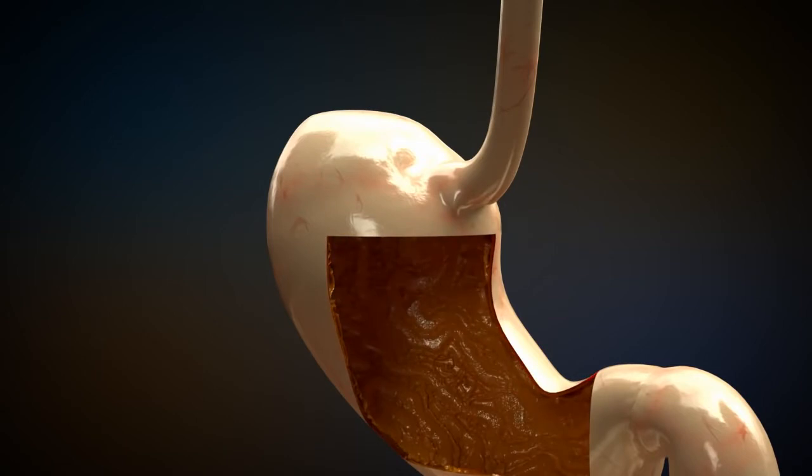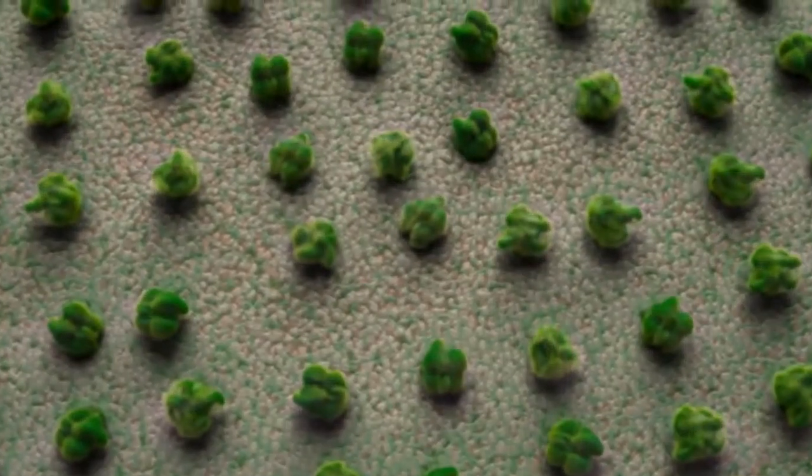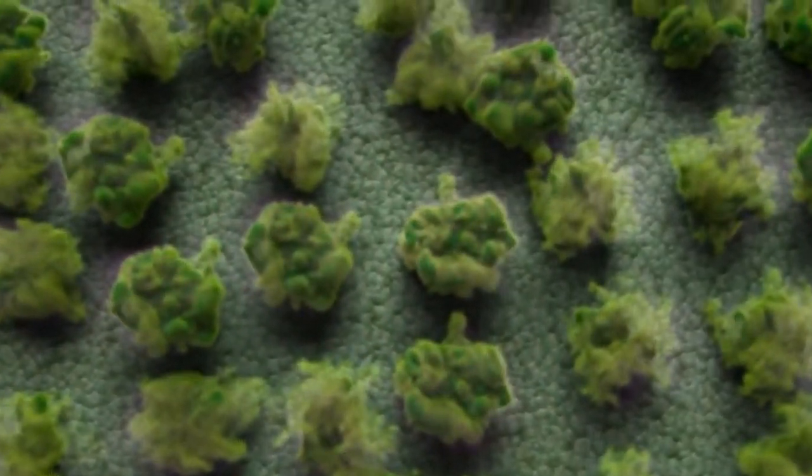On the inside there are rugae that allow the stomach to enlarge when food is consumed. The stomach wall contains gastric glands. They produce mucus which is able to protect the stomach wall from the secreted gastric acid.